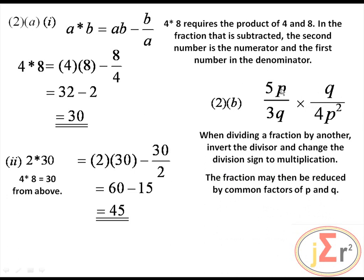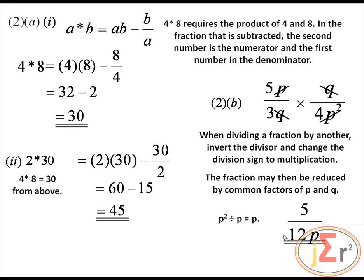P appears in the numerator and denominator, and Q and Q will cancel completely. P into P squared leaves P, and the Q's cancel. We have 5 alone in the numerator, and the denominator will be 12Q — but wait, the Q's are gone and P did not cancel completely. So the result is 5 divided by 12P.